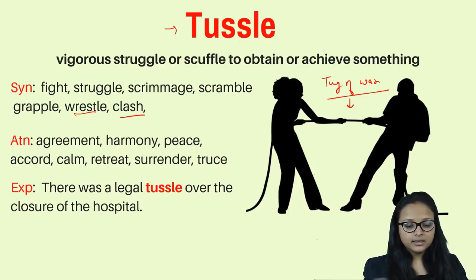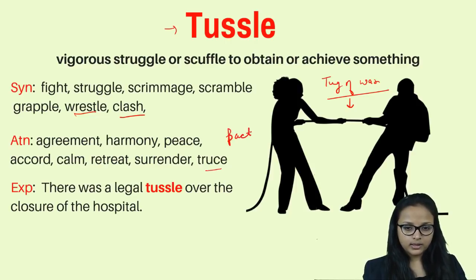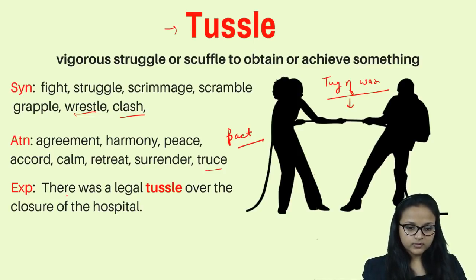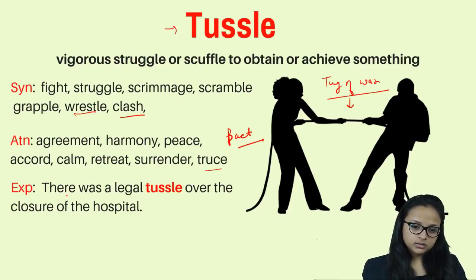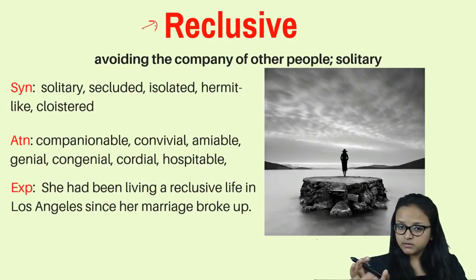Antonyms of tussle are: agreement, harmony, retreat, surrender, and truce — where you make a pact with the other party. For example: there was a legal tussle over the closure of the hospital. It means the hospital was going to be closed and people were having a legal struggle to save it.